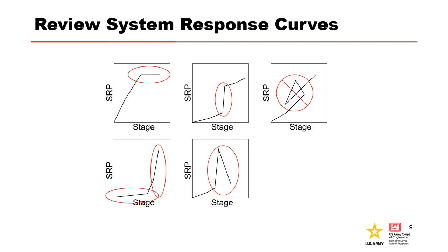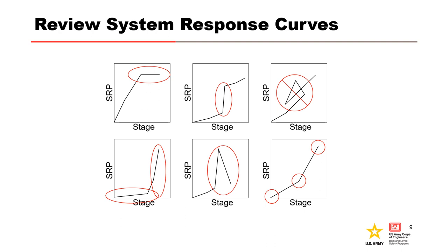In this example, tailwater reduces gradient. Since stage has already passed through a higher system response probability at lower stage, timing and rate of progression are important. If progression is fast and tailwater rises slow, the system response probability may not come down as much or at all. In this last example, are sufficient stages evaluated to identify inflection points?